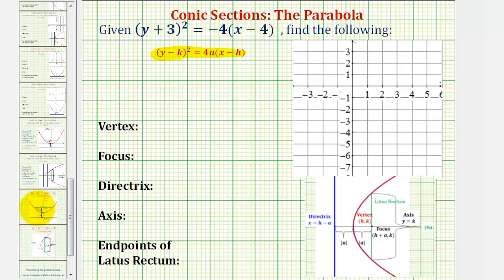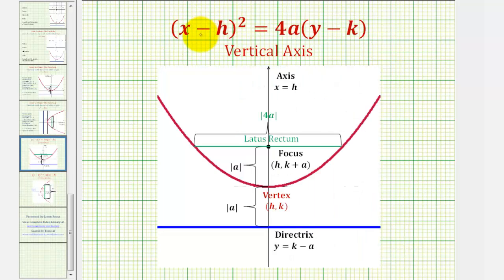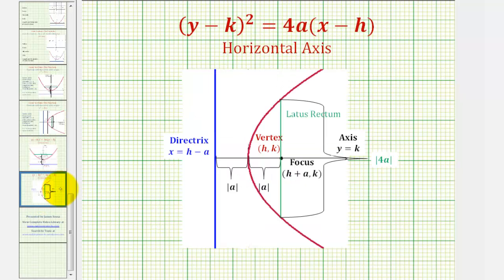For a quick review, if the x part was squared and the y part was to the first power, the parabola would have a vertical axis, meaning it would open up or open down. But in our case, the y part is squared and the x part is to the first power, so we have a horizontal axis of symmetry where the parabola will open left or right based upon the sign of a.